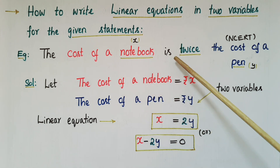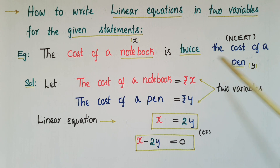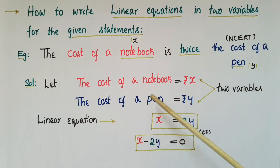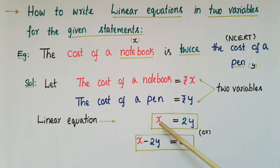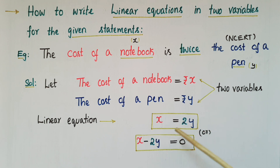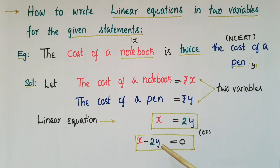The given statement is: the cost of a notebook is twice the cost of a pen. So the linear equation in two variables is: x is equal to twice the cost of a pen, that is y. So x equals 2y, or x minus 2y equals zero.